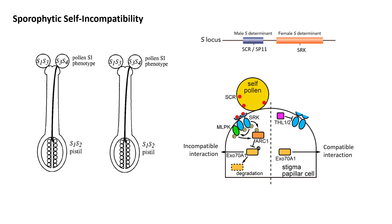In sporophytic SI systems, which is seen in Brassica species, the genotype of the diploid male parent and not that of the pollen which is a gametophyte plays a role in the expression of self-incompatibility. The S locus includes two tightly linked genes that form the S haplotype, inherited as a single Mendelian locus. The two genes are the S locus receptor kinase or SRK gene, and the S locus cysteine-rich protein or SCR gene. The female determinant is the kinase SRK, located in the stigma. SCR, the male determinant, is located in the pollen coat and is of tapetum origin, that is, of diploid origin.